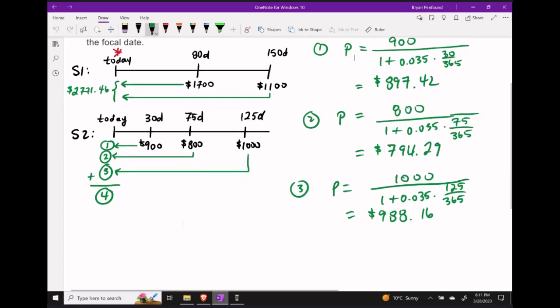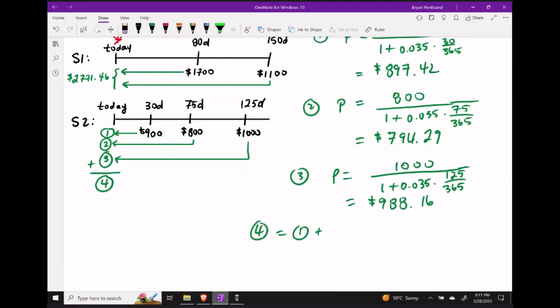Our last step is to add up all three previous amounts, and we get $2,679.87.